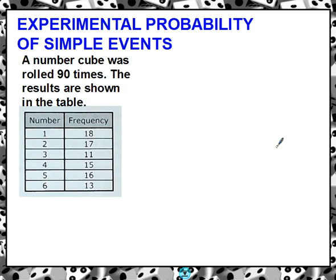So the difference that we're talking about today is experimental probability. We've been talking about theoretical probability, so I want to just take a second and talk about experimental probability and what that is.